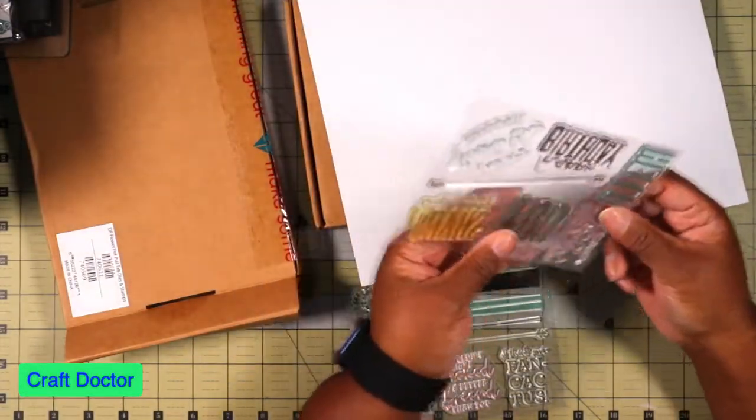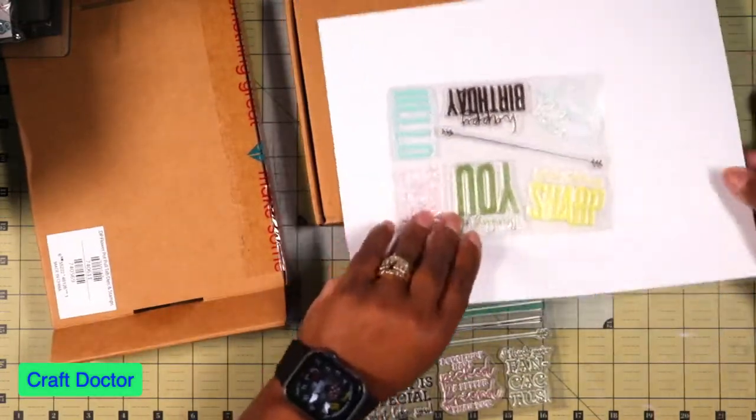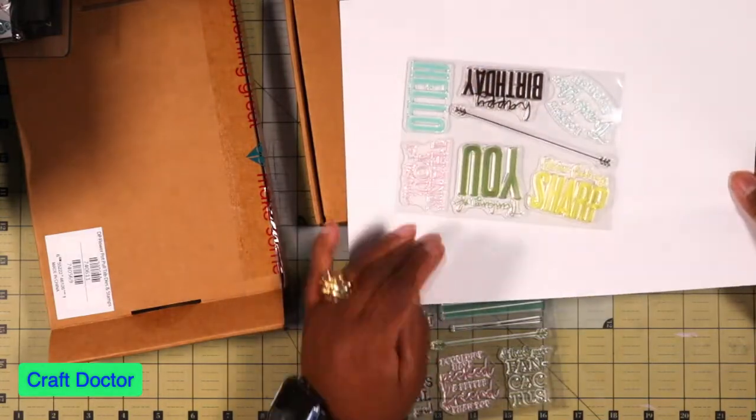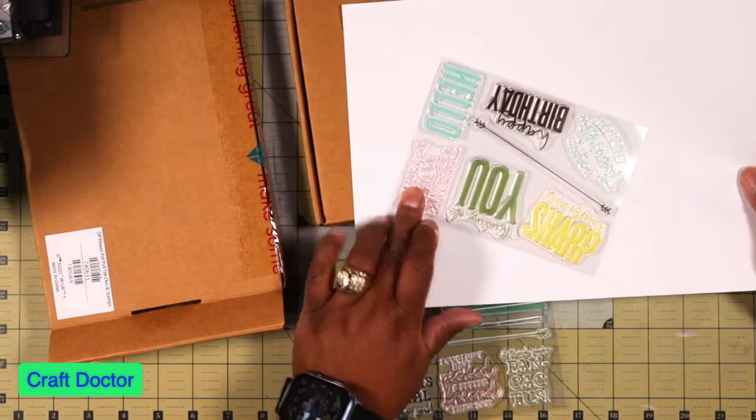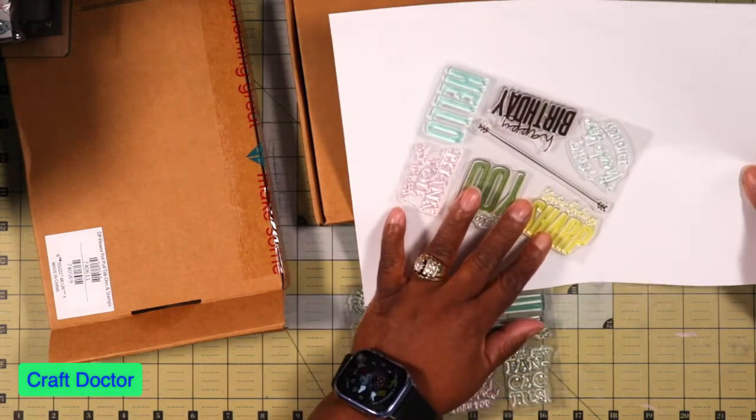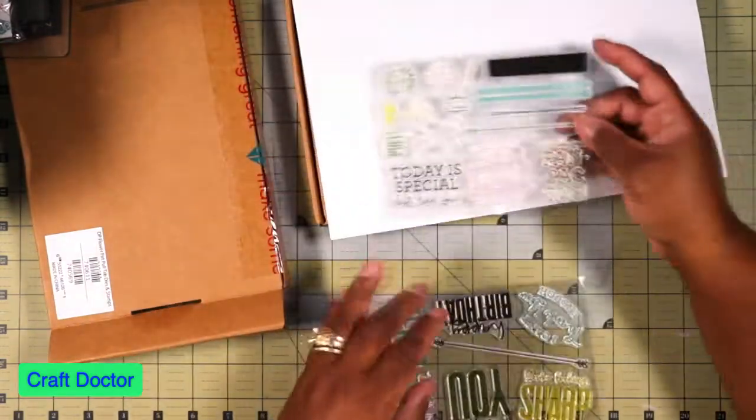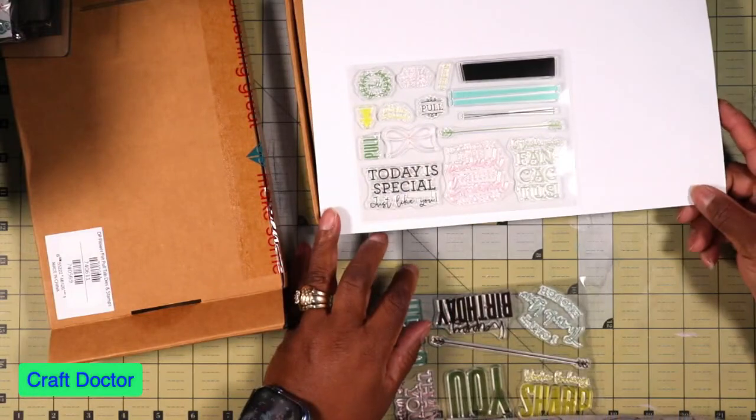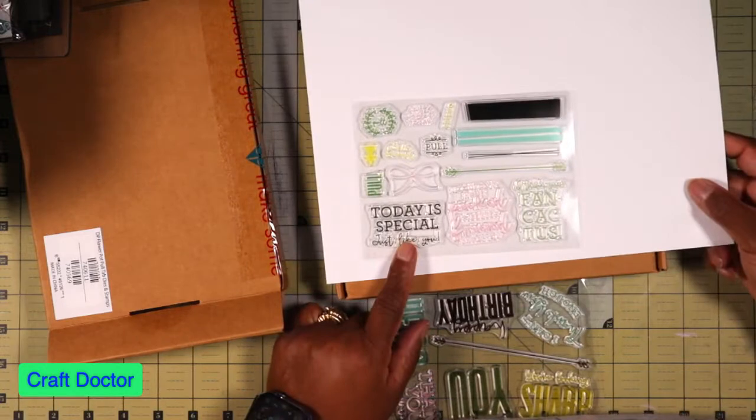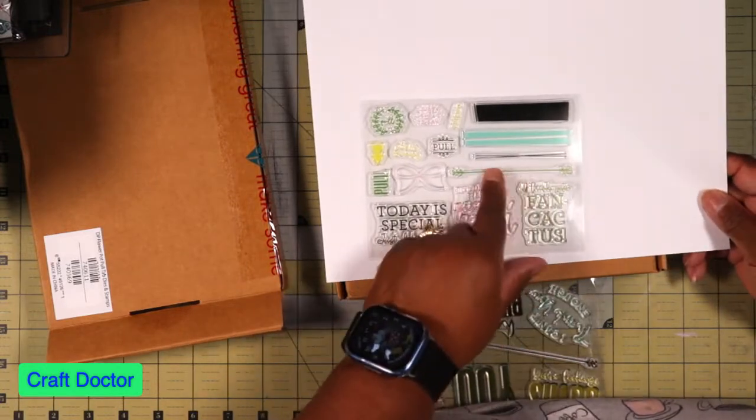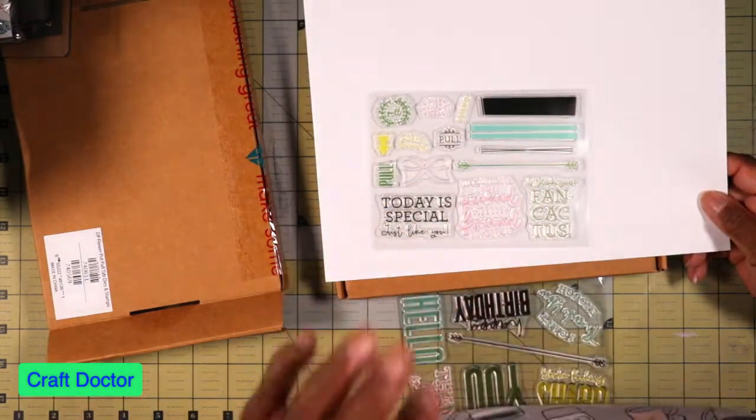These are such cutie pies. I love big stamps like this. What does this say? Happy birthday, thinking of you, thinking of you, thank you, and you're looking sharp. That's cute. And then this one: today's special just like you. That's super cute.